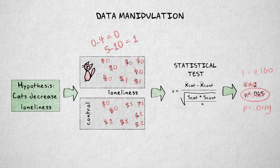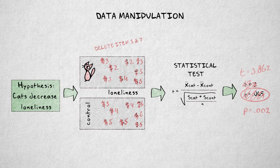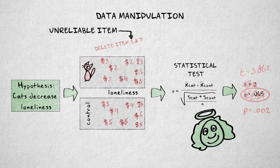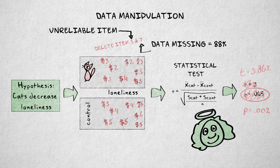Data manipulation could consist of transforming scores. Data selection could consist of selecting only certain items in a questionnaire, using only certain variables, or removing one of several experimental conditions. The selection and manipulation methods can be harmless if they are performed for good reasons — for example, because scores are heavily skewed, questionnaire items are unreliable, or certain variables or conditions show too much missing data to provide valid results.